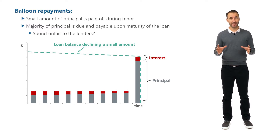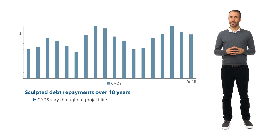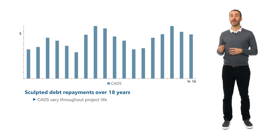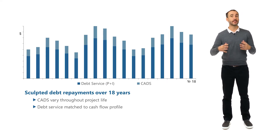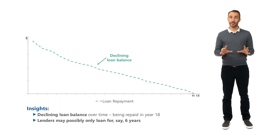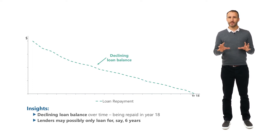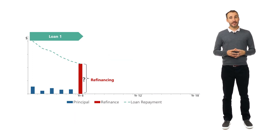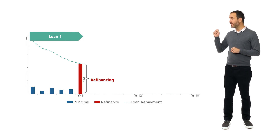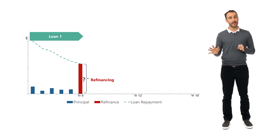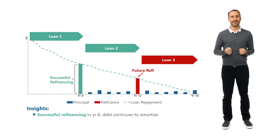What may surprise you is that this is actually a common structure. Let me give you an example. Let's say we have a 20-year project with 18 years of debt service and DSCR sculpted repayments. The principal is repaying the loan balance over time based on the expected cash available for debt service over 18 years. The challenge is that in many places, lenders can't lend you money for 18 years. Instead, they may provide you with a loan of six years, with an assumption you'll be able to refinance that loan in year six and year twelve to get a total of 18 years of debt service.